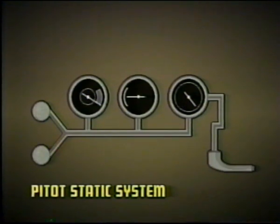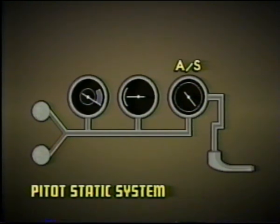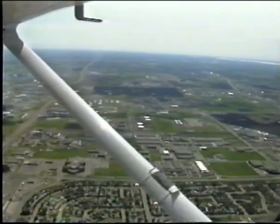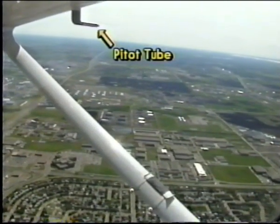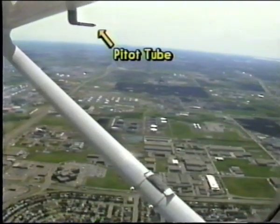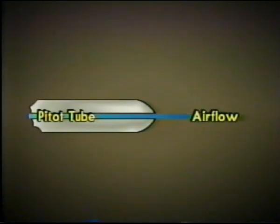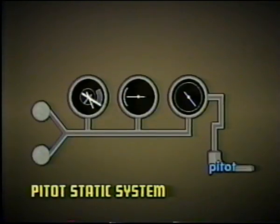Several of the instruments are connected to the pitot-static system; others use a gyroscope. Instruments connected to the pitot-static system include the airspeed indicator, vertical airspeed indicator, and the altimeter. This system includes a pitot tube and a static pressure tube. The pitot tube is usually found on the underside of the wing, located where it is clear of slipstream and other air disturbances. The opening of the tube faces the line of flight. As you are flying, the atmospheric pressure in the tube increases due to the movement of the aircraft through the air. The only instrument directly connected to the pitot tube is the airspeed indicator.